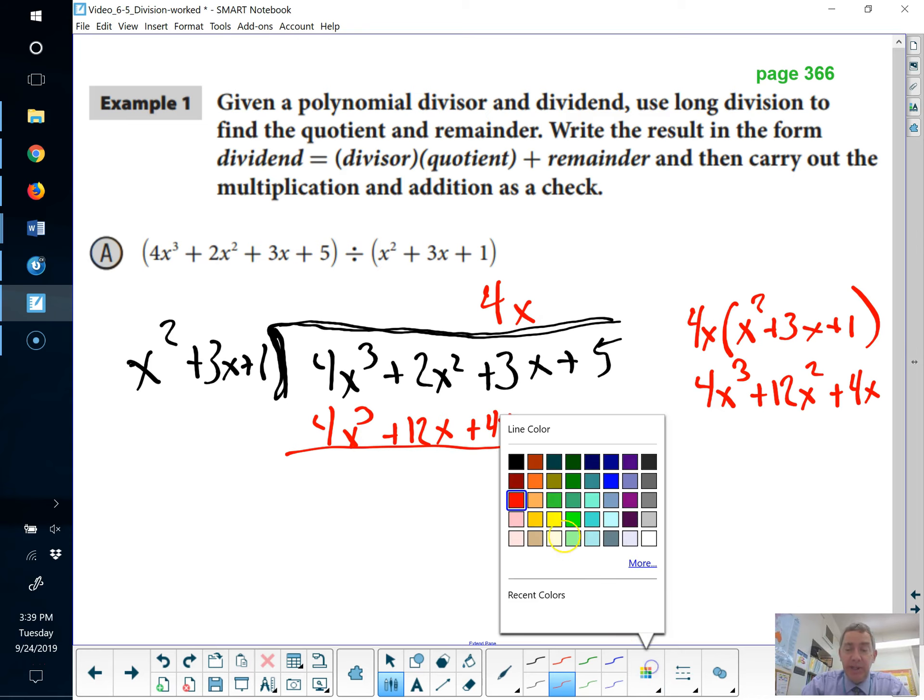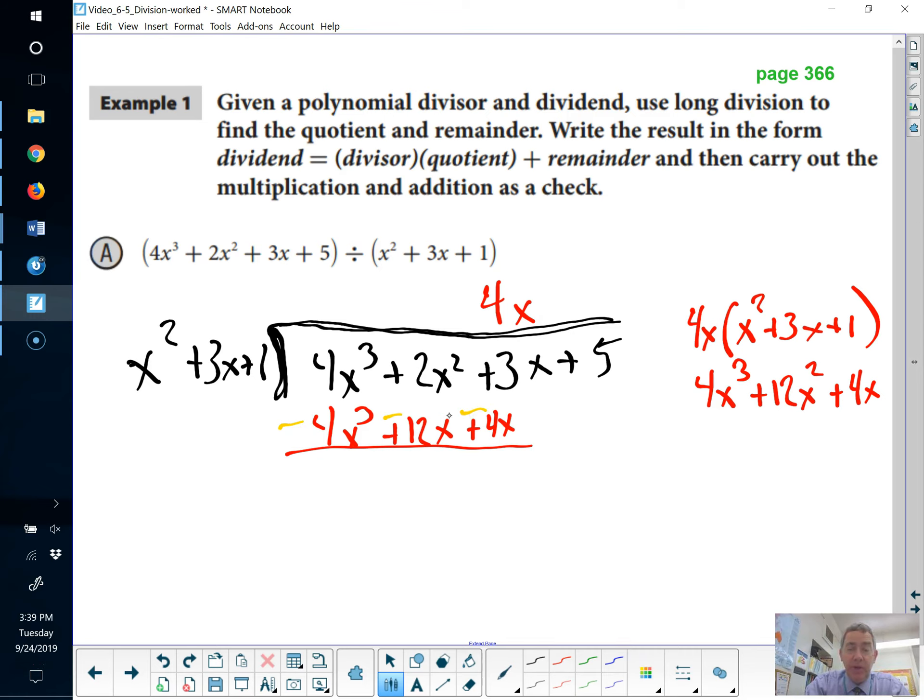If I'm going to subtract, it makes life easier for me if I just write out what I'm going to do. And then I can add the pieces together. The 4x cubed minus 4x cubed is lovely. That's 0. 2x squared minus 12x squared is 10x squared. And 3x minus 4x is minus x. And then, bring down the plus 5, the same as you brought down things before. Good. Now, we've got 10x squared minus x plus 5 down at the bottom there. Doing all right.